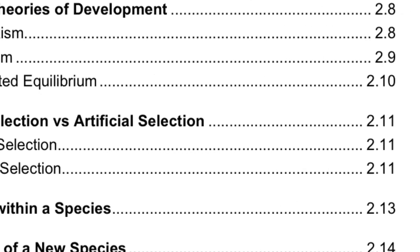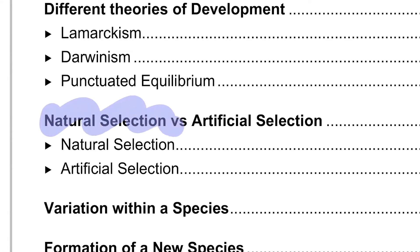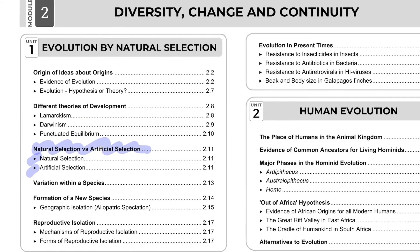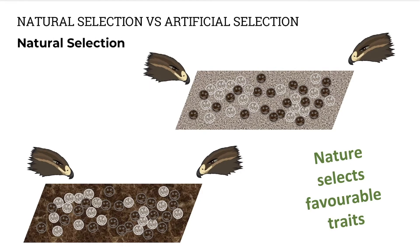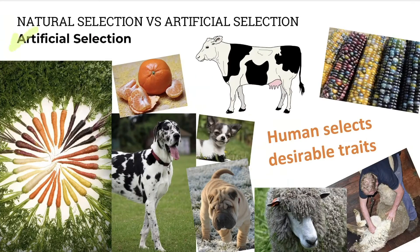Then we'll have a look at the differences between natural selection and artificial selection — the differences and similarities between these two. Natural selection is the mechanism of evolution, where nature determines what are the favourable characteristics and which organism will live or die. Artificial selection is where humans determine the desirable traits — whether it's seedless fruit or cows that produce a lot of milk — the breeder or the farmer determines what are the favourable characteristics.